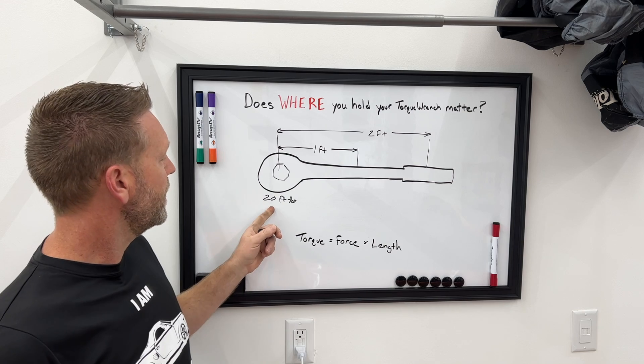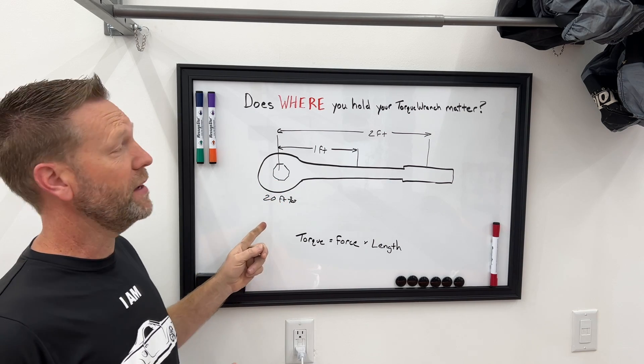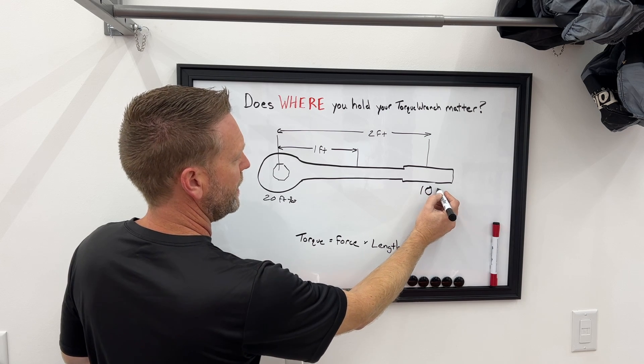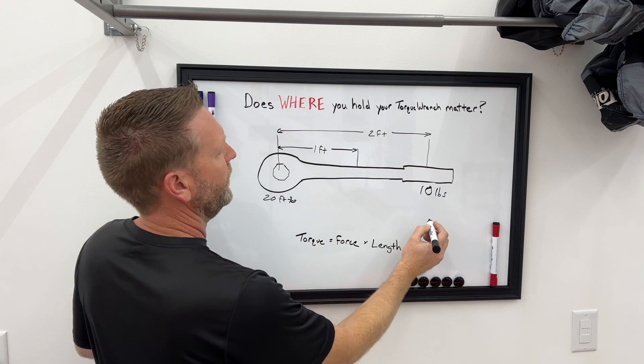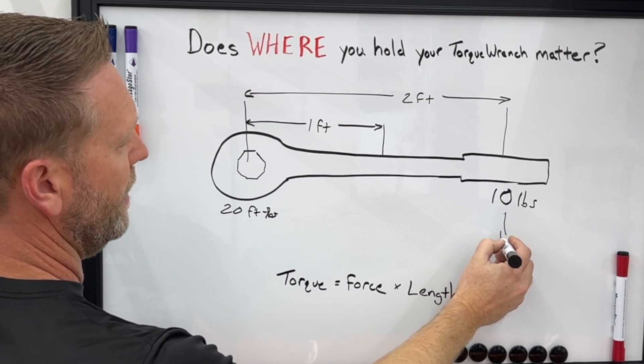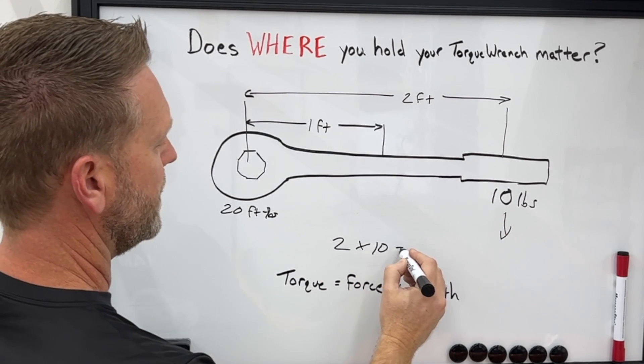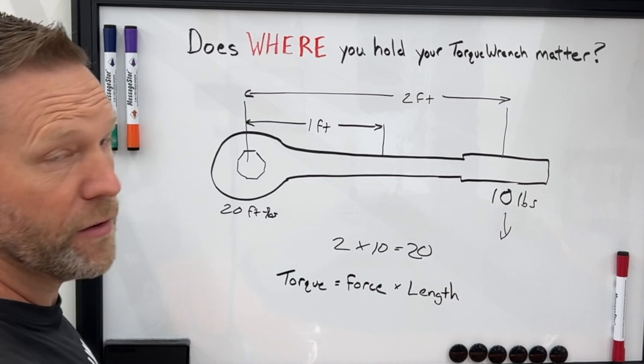So if you wanted this to be tightened to 20 foot pounds, it only requires 10 pounds of force down in this direction because you have two feet times your 10 pounds and you have 20 foot pounds.